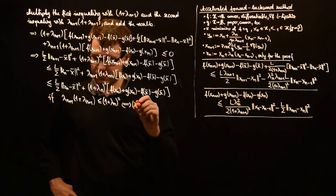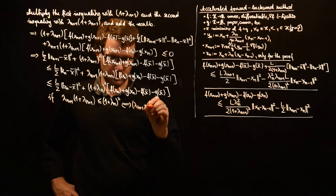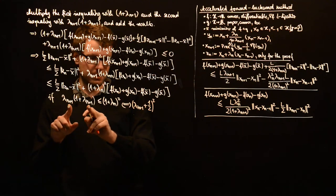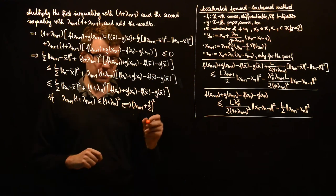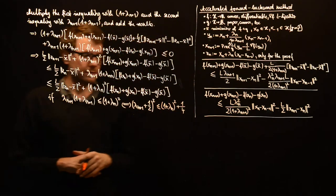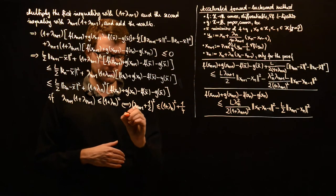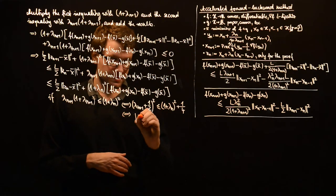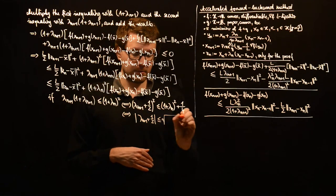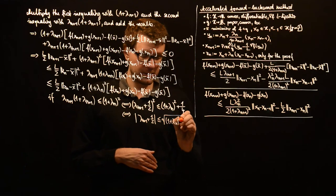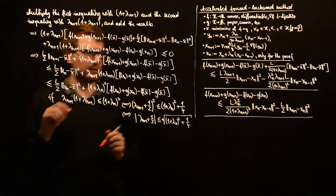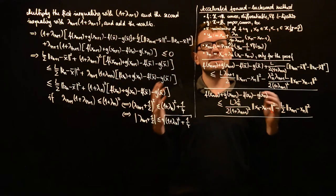One way to solve this quadratic inequality is to make it a quadratic expression in λ_{n+1}. We write it as (λ_{n+1} + 1/2)², which equals λ_{n+1}² + λ_{n+1} + 1/4. We correct by also adding 1/4 on the right-hand side. Since the right-hand side is positive, we get that the absolute value of (λ_{n+1} + 1/2) is less than or equal to the square root of (1 + λ_n)² + 1/4. This is the last ingredient to define the accelerated forward-backward method.